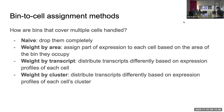The first improvement is 'weight by area.' In the case where multiple cells share a bin, you look at the area each cell covers within that bin, then assign the expression in proportion to that area. A cell covering more of the bin gets more of the expression, applied equally for every gene.